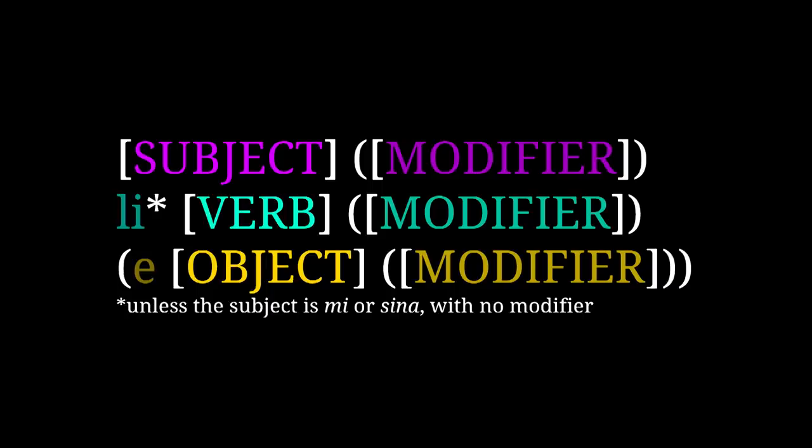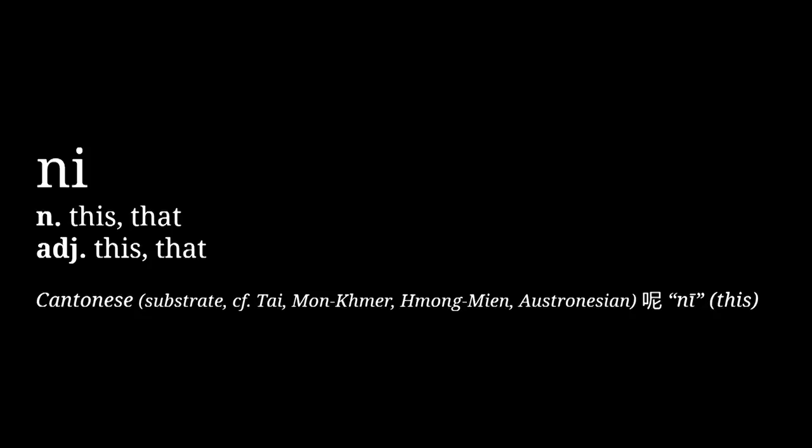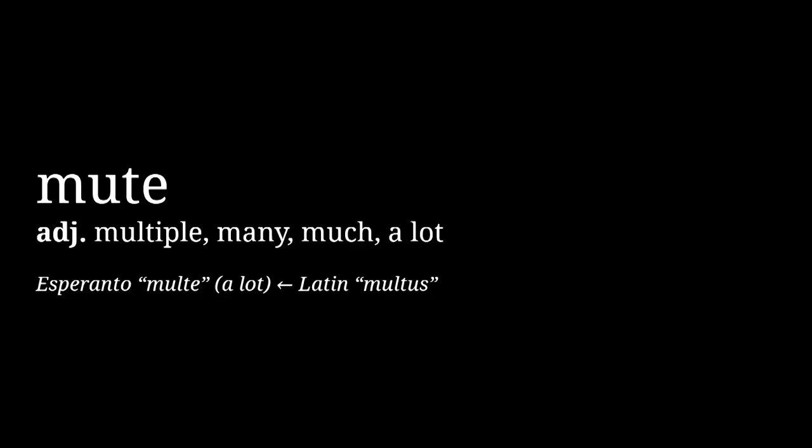That's about it for grammar for this episode. We'll be going over a few more complicated examples, but as long as you remember li, e, and modifiers coming after what they're describing, you have everything you need to parse them. Let's learn some new vocab. We went over the three main pronouns in Toki Pona last time, but here's another one. 'Ni' means 'this' or 'that'—it can be both a noun and an adjective, and like all Toki Pona words, can be singular or plural. And on the topic of plurality, while Toki Pona doesn't have a basic grammatical way to show plural nouns, the word 'mute' means 'a lot' or 'many.' This word also has a function in Toki Pona's numbering system, but we're not ready for that just yet.